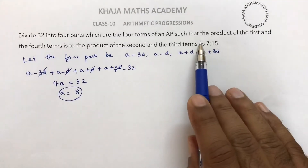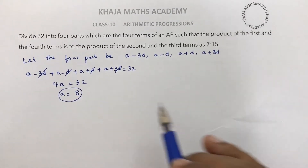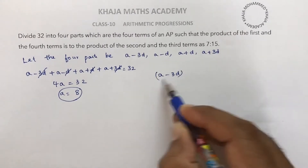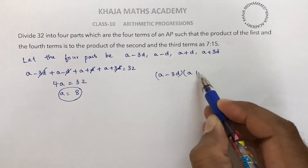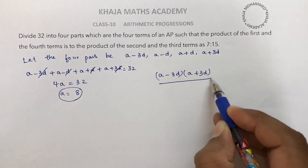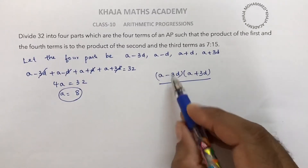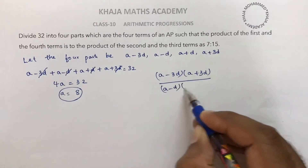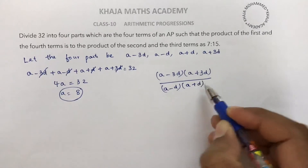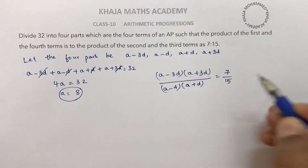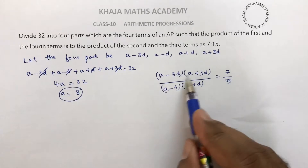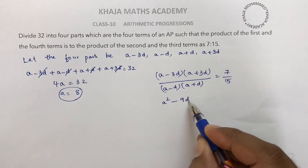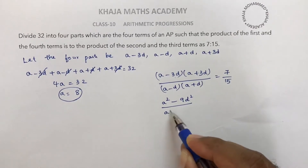Now applying the second condition: the product of the first and fourth terms (a − 3d)(a + 3d) to the product of the second and third terms (a − d)(a + d) is 7 is to 15. Using the identity (a + b)(a − b) = a² − b², we get a² − 9d² over a² − d² equals 7 by 15.